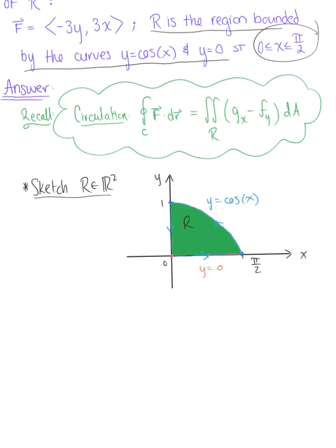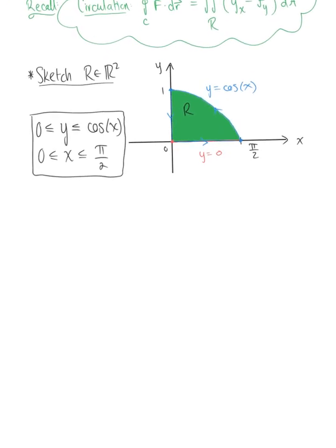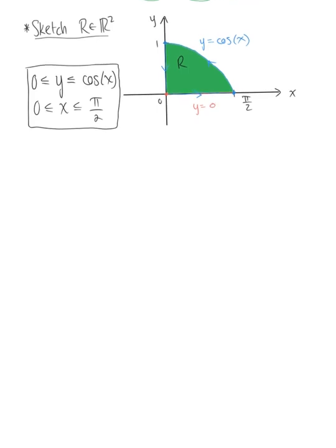From here we can state that the bounds for Y, Y is greater than or equal to zero, less than or equal to cosine of X. And again, X is given to us. X is greater than or equal to zero, less than or equal to pi by two. If you could see those bounds by looking at this given example, by the description, by all means go right for it. But it's always nice to see what exactly we're doing.